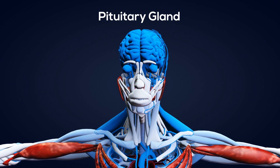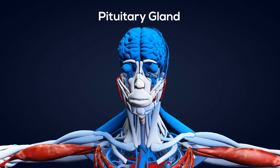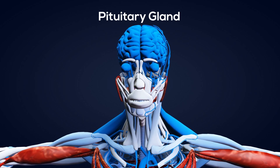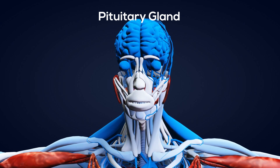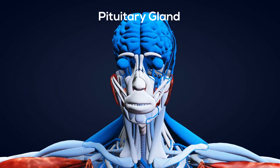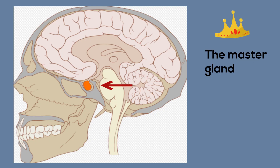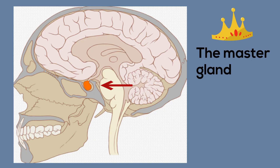It is called the master gland because it secretes hormones that affect the other glands including your thyroid and adrenals. It is the size of a pea and is located behind the bridge of your nose and is attached to the base of your brain.